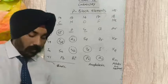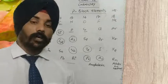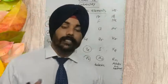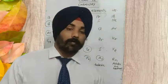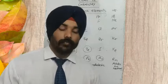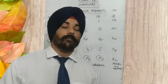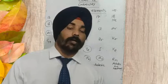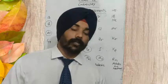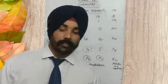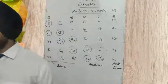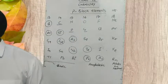So to summarize: the acidic character or basic character of oxides of P block elements — acidic character increases from left to right in a period and basic character decreases. And in a group from top to bottom, acidic character decreases and basic character increases. This is derived from the metallic and non-metallic nature of the elements.